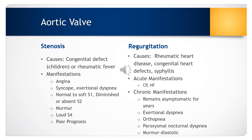Aortic valve regurgitation is typically a result of rheumatic heart disease, a congenital heart defect, or untreated syphilis. Aortic regurgitation causes retrograde blood flow from the ascending aorta into the left ventricle during diastole, resulting in volume overload. The left ventricle initially compensates by dilation and hypertrophy. Myocardial contractility will eventually decline and blood volume will increase in the left atrium and pulmonary bed, resulting in pulmonary hypertension and right ventricular failure.